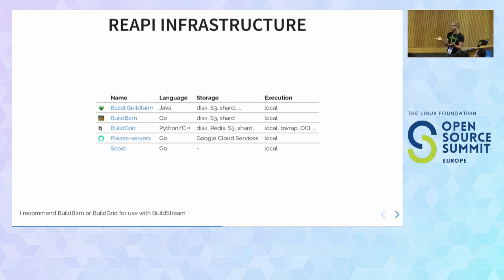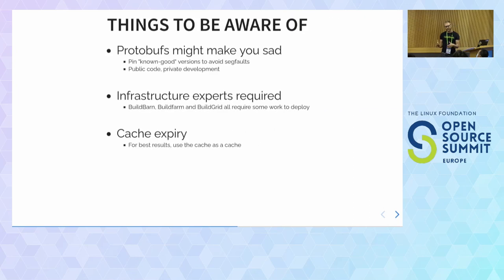They have different implementation languages — if you prefer Python, look at BuildGrid. The last two, Please Servers and Scoot, provide less overall: Please Servers is designed just for use with Please, and Scoot is just a build farm without a cache. These are all worth checking out, but they can be quite difficult to deploy. In an enterprise with Kubernetes experts to hand, no problem. But for an open source project wanting to set up a build farm, you'll burn through a lot of volunteer time unless someone enjoys Kubernetes pod deployments on weekends.